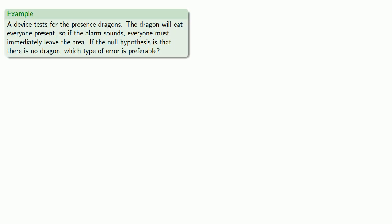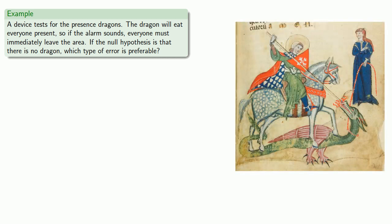For example, suppose we have a device that tests for the presence of dragons. The dragon will eat everyone present, so if the alarm sounds, everyone must immediately leave the area. If the null hypothesis is that there is no dragon, which type of error is preferable?